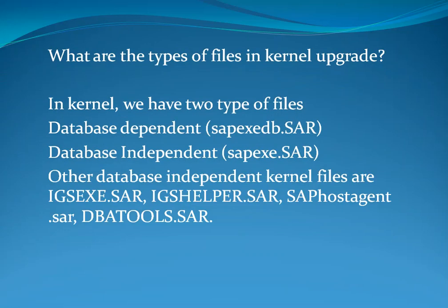What are the types of files in Kernel Upgrade? In the kernel, we have two types of files: Database Dependent Files and Database Independent Files. The Database Dependent file is SAPEXEDB.SAR. The Database Independent files are SAPEXE.SAR, IGSEXE.SAR, IGSHelper.SAR, SAPHostAgent.SAR, and DBAtools.SAR.